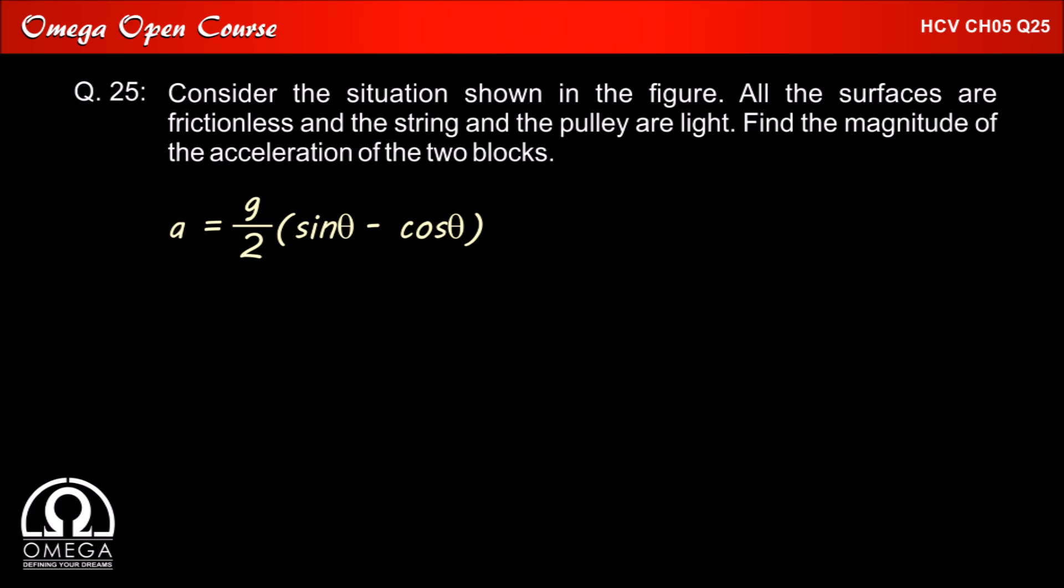Putting the values of sin theta and cos theta in acceleration, that is (g/2) into (sin θ - cos θ), we get a is equal to (g/2) into (4/5 - 3/5) which is equal to g/10. This is our answer.